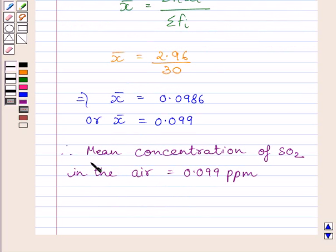So, we get mean concentration of sulfur dioxide in the air is equal to 0.099 parts per million. This is our required answer. This completes the session.